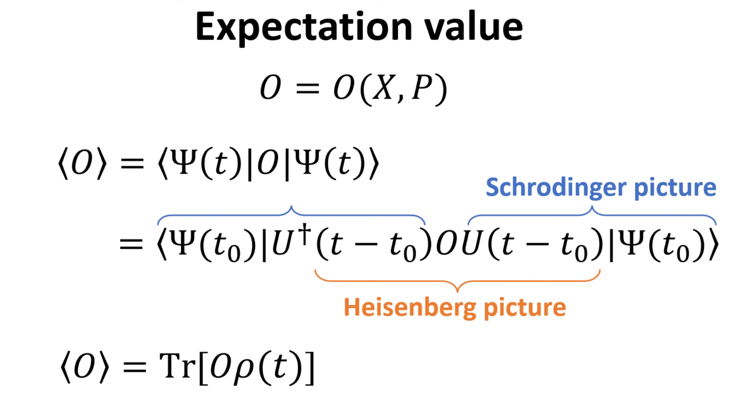Here, we see that in the computation of the expectation value, we could have also let the state vector be time independent and attribute the time evolution to the operator instead. Such an approach is called the Heisenberg picture, which we will leave to a separate video. The expectation value of observable at time t using the density operator is also given here, which is just the trace of the product of the time independent observable O with the density operator at time t.